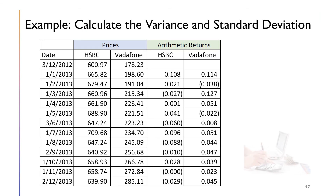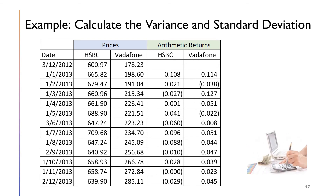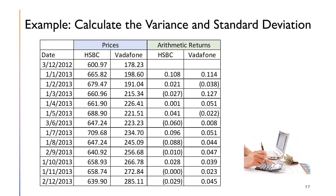Let's look at an example. There are two stocks: HSBC and VedaFont. The price and arithmetic returns are given. Calculate the variance and standard deviation. Please try on your own first using the formula given in the previous slide. Happy trying!